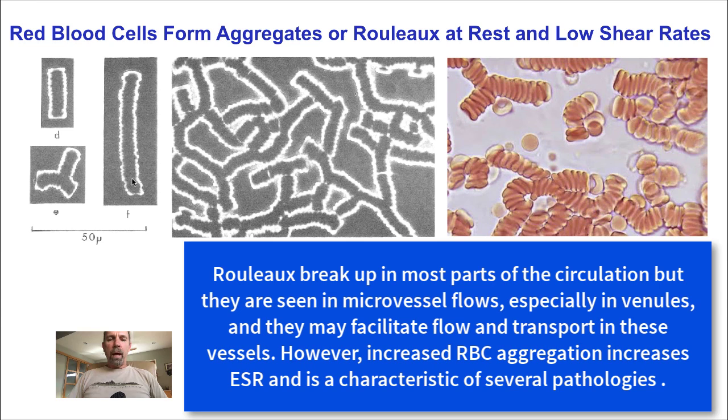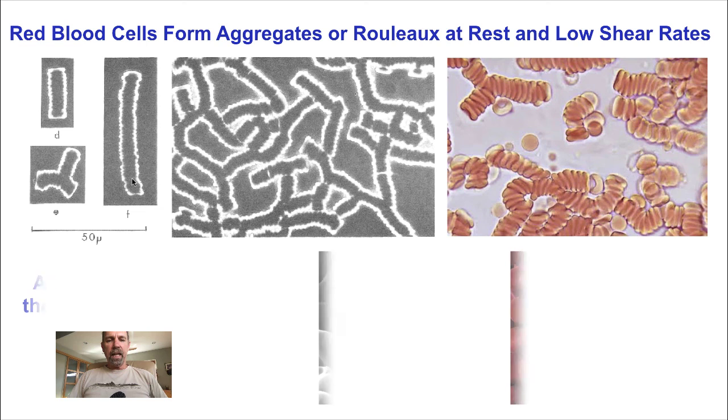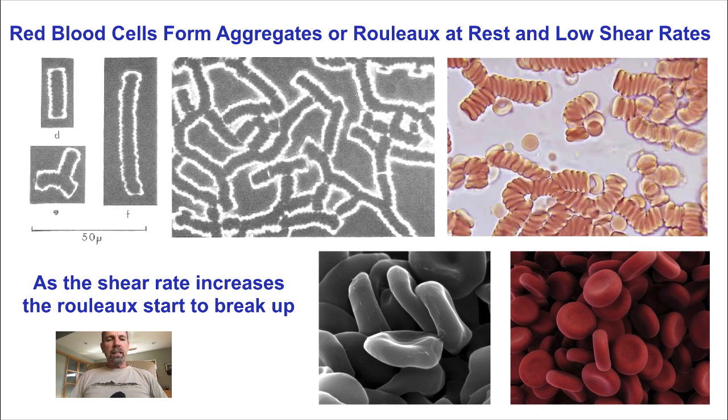So while blood is able to form these Rouleau and Rouleau can be seen in the circulation, usually as the shear rate increases to normal rates, typical of most vessels in the circulation, the Rouleau start to break up.